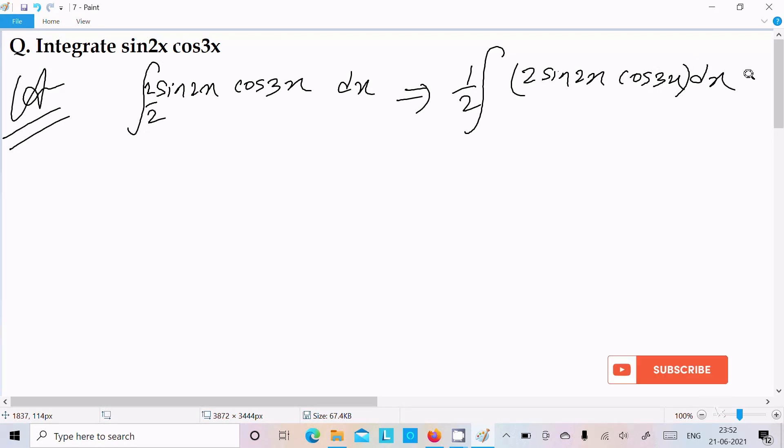We can easily achieve the output. So suppose here 2 sin a into cos b, suppose this one is a and this one is b. Then the formula of 2 sin a cos b is sin(a plus b) plus sin(a minus b).